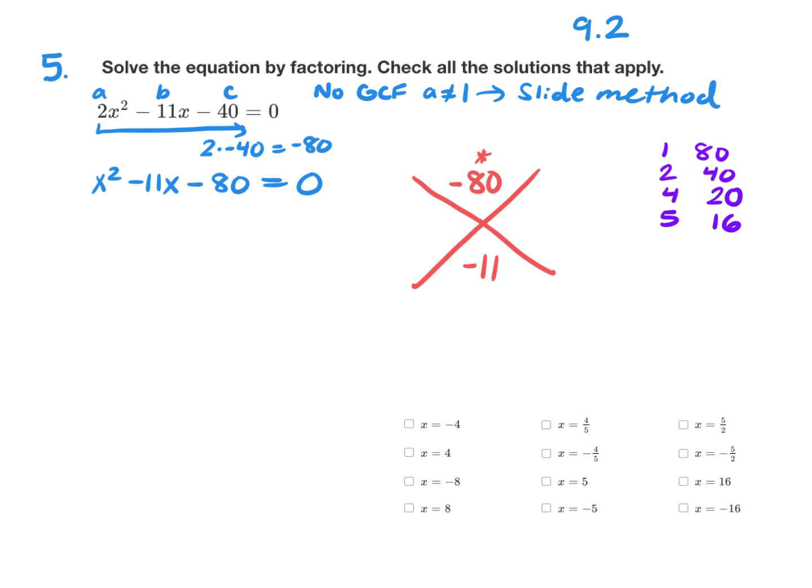6 doesn't divide into 80, neither does 7, but 8 times 10 makes 80. To multiply to negative 80, we need one positive and one negative number. Since I need to add to negative 11, my bigger number has to be negative. Let's look for numbers that are 11 apart. I see that 5 and 16 are 11 apart because 16 minus 5 is 11. However, to add to negative 11, I need more negatives than positives, so my two factors are 5 and negative 16.